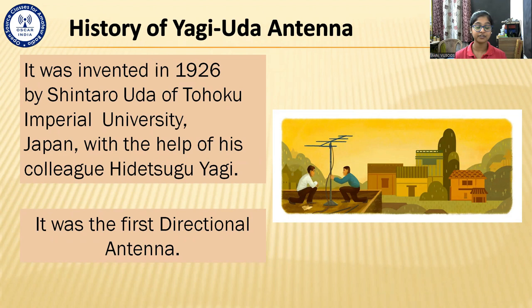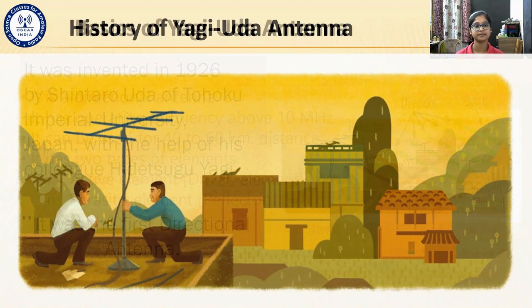It was the first directional antenna. It was also the first antenna designed to cancel out noise or jamming with high gain. The pair — Yagi and Uda — became known as the fathers of the antenna.